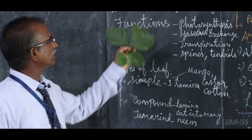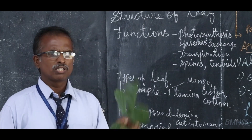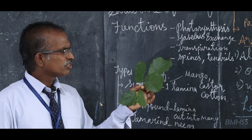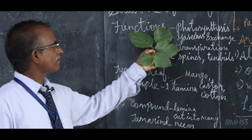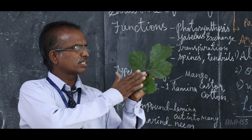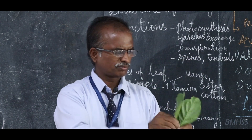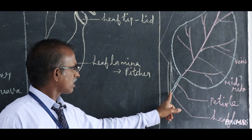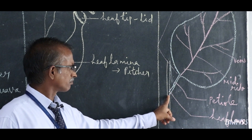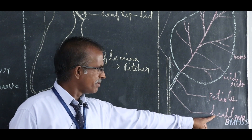Let us now learn the structure of the leaf. The leaf has a very important structure. Before going to the function, we want to learn the structure of the leaf. The portion which is attached to the stem or branch — that basal part is called the leaf base.